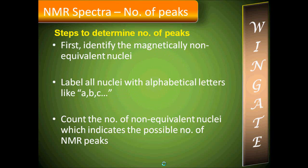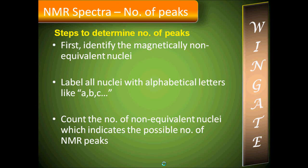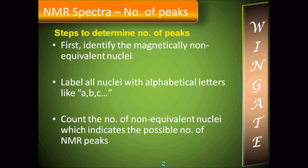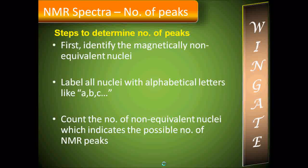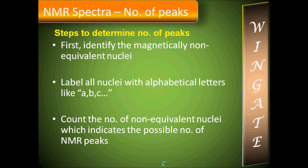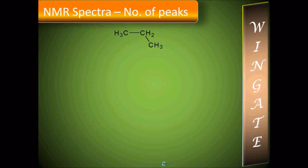So what are the steps to identify the number of peaks for a given molecule? First, identify magnetically non-equivalent nuclei in the given molecule. Then label all nuclei with alphabetical letters like A, B, and C. Finally, count the number of non-equivalent nuclei, which indicates the possible number of NMR peaks.